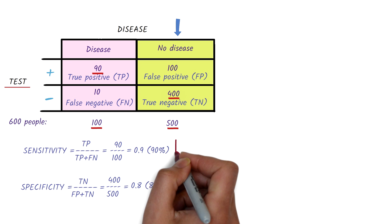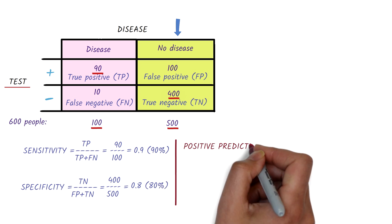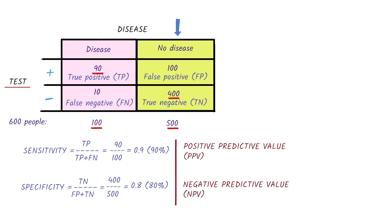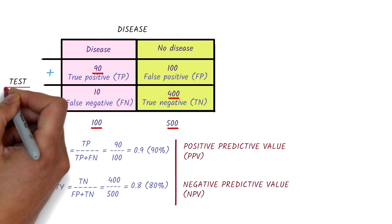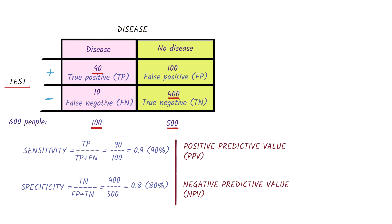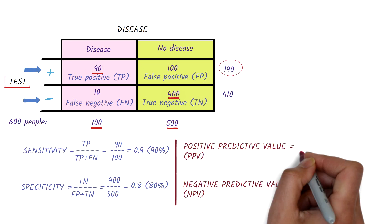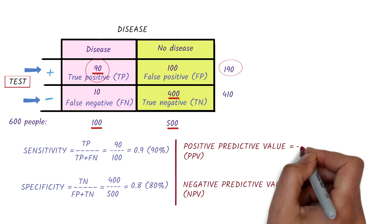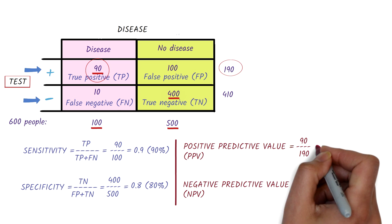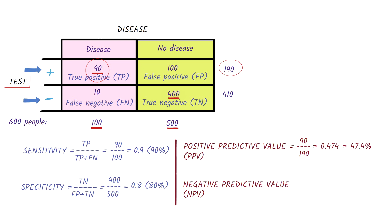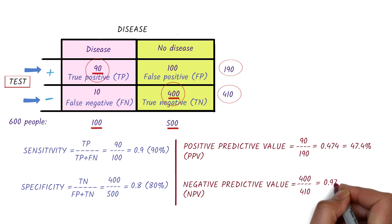Finally, let's have a quick look at two related measurements: positive predictive value and negative predictive value. It uses the same information but looks at it from a testing point of view. Using the same values from our previous example, there are 190 people who test positive and 410 people who test negative. The positive predictive value is the proportion of people with a positive test who actually have the disease — in this example, it is 47.4%. The negative predictive value is the proportion of people with a negative test who do not have the disease — in this case, it is 97.6%.